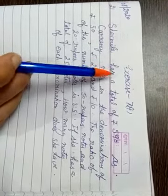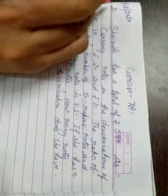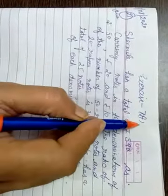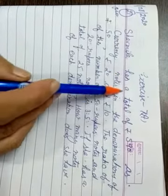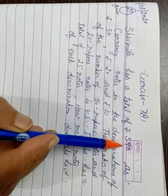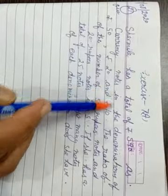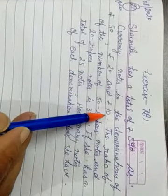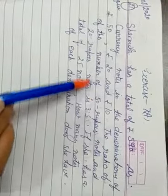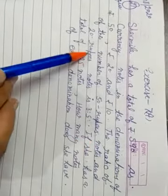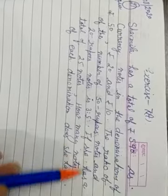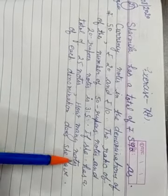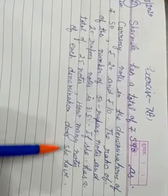Good morning children. Today we are going to start question number 21 of exercise 7a. Sharmila has a total of rupees 590 as currency notes in the denomination of rupees 50, rupees 20 and rupees 10. The ratio of the number of 50 rupees notes and 20 rupees notes is 3 ratio 5. If she has a total of 25 notes, how many notes of each denomination does she have?